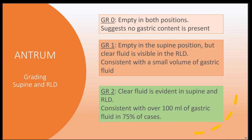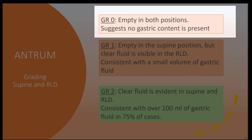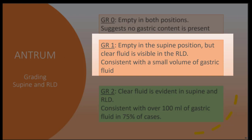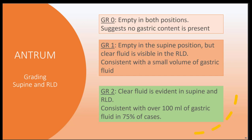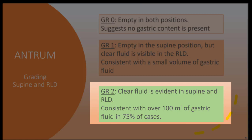Now that you know how to identify liquid, solid, and empty gastric antrum — how do we quantify the gastric antrum if there are liquids? There are two ways: we can use a grading system or we can measure the surface area. In the grading system, we evaluate the gastric antrum in both supine and right lateral decubitus positions. If the antrum appears empty in both positions, this is a grade zero — stomach empty. If the stomach is empty in the supine position yet liquid is seen in the right lateral decubitus position, that is grade one, consistent with a small volume of gastric fluid, usually not at risk. Grade two is clear fluid visible in both supine and right lateral decubitus positions, consistent with more than 100 mL of gastric content in 75% of cases.